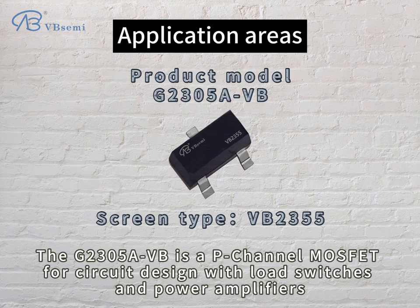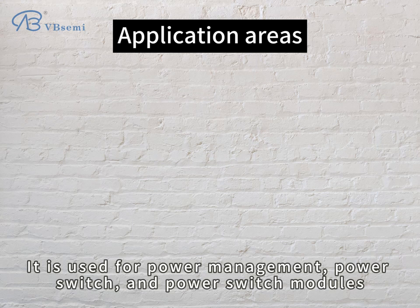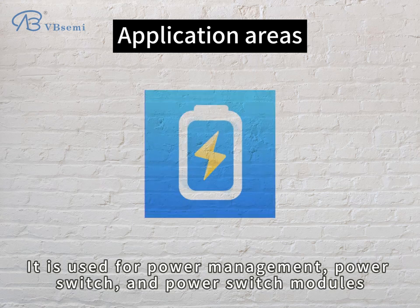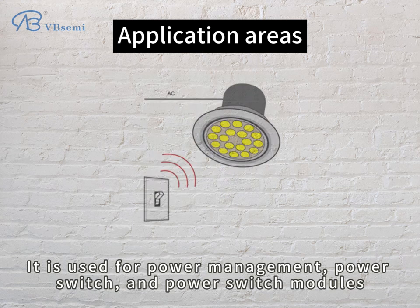The G2305AVB is a P-channel MOSFET with a core circuit design supporting load switches and power amplifiers. It is used for power management, power switch, and power switch modules.